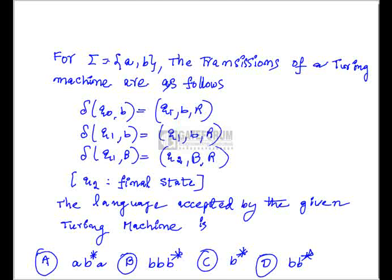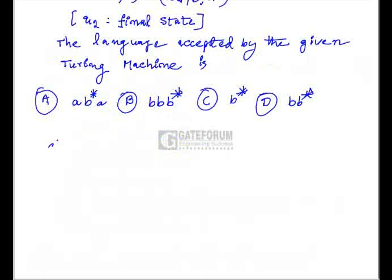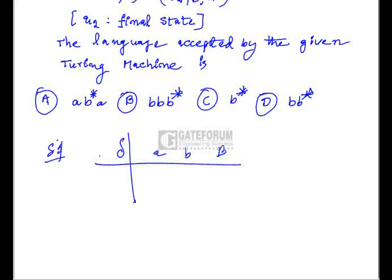Sigma contains A and B, but transitions are only defined for B. Whenever A is encountered, the machine halts without reaching a final state — so Q0 on A will halt and Q1 on A will halt. Q0 on B transitions to Q1 with B, moving right. So for the first B, the state changes to Q1.